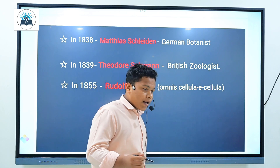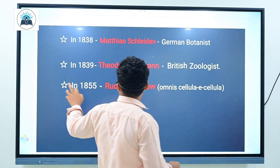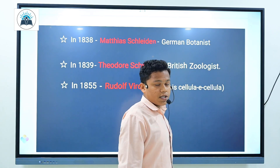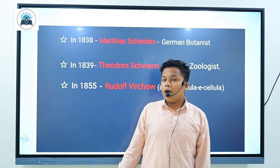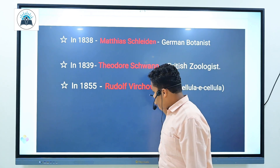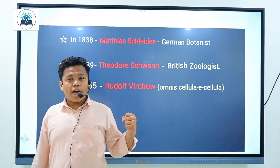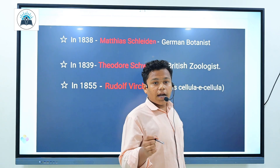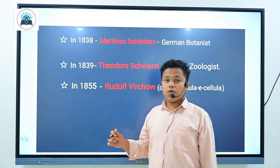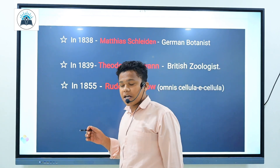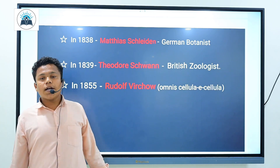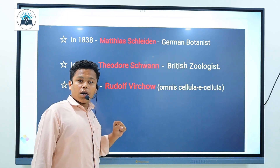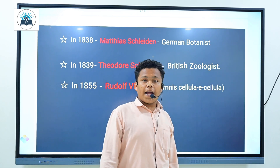At about the same time, Theodore Schwann in the year 1839, a British zoologist, studied different kinds of animal cells and concluded that they had a thin outer layer, which is today known as the plasma membrane. He also concluded that the presence of cell wall is a unique characteristic of plants.